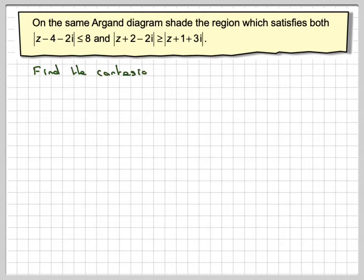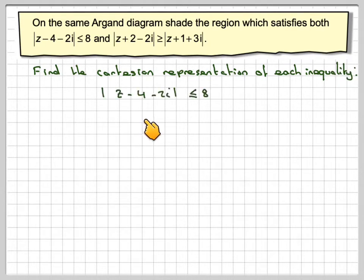Let's find the Cartesian representation of each inequality. Take the first one: |z - 4 - 2i| ≤ 8. Since z = x + iy, we'll replace z with x + iy.